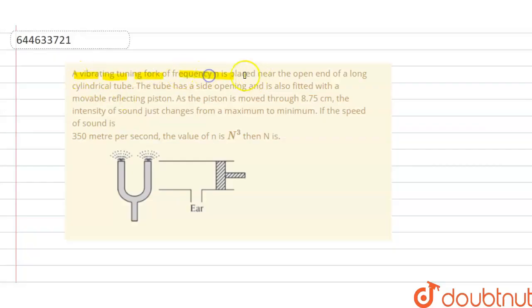A vibrating tuning fork of frequency n is placed near the open end of a long cylindrical tube. The tube has a side opening and is also fitted with a movable reflecting piston. As the piston is moved through 8.75 centimeter, the intensity of sound just changes from a maximum to minimum.